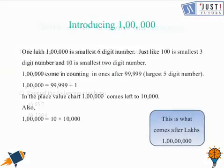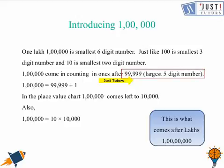Let's begin our lesson with the introduction to lakhs. One lakh, 1,00,000, is the smallest six-digit number, just like 100 is the smallest three-digit number and 10 is the smallest two-digit number. One lakh comes in counting after 99,999, which is the largest five-digit number. You can verify this by adding 1 to 99,999, which gives 1,00,000 or 1 lakh.